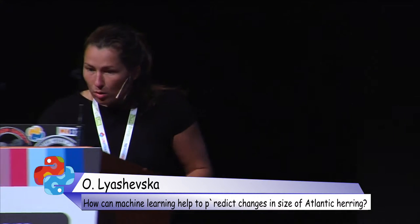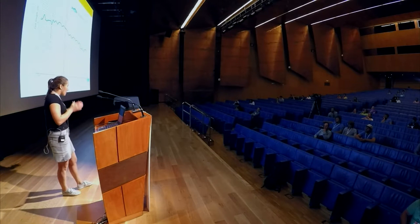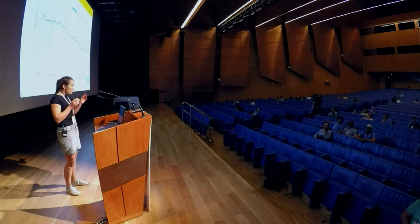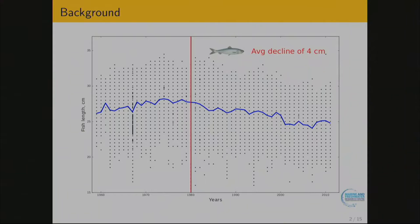Here's the background of the problem. In the past 60 years, we observed a decline in the size of fish by about 4 centimeters on average. If you think about herring, which is about 20 centimeters long, 4 centimeters is a lot of reduction. We would like to find out what's the problem, why it's happening, and we're going to use machine learning to answer this question.